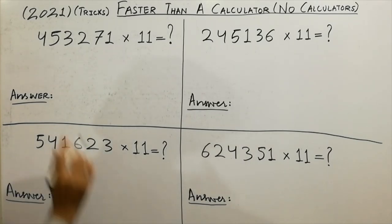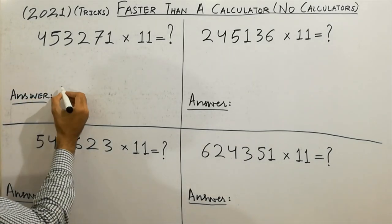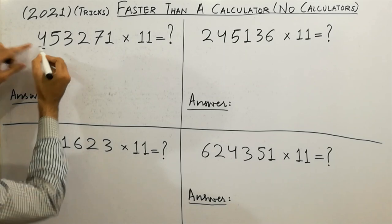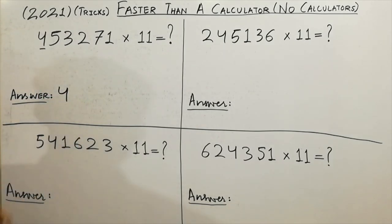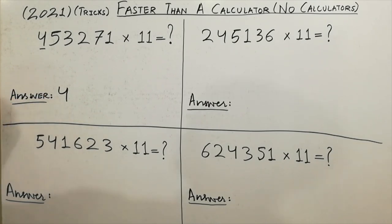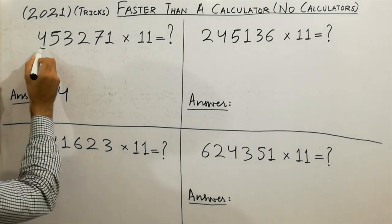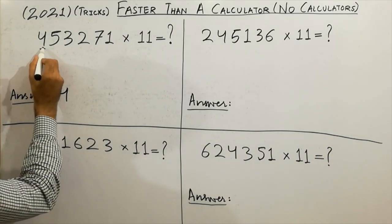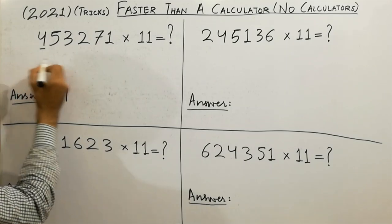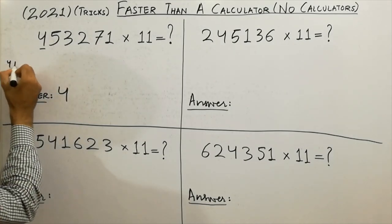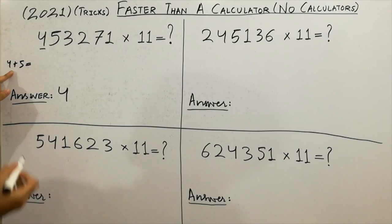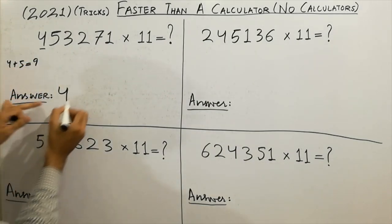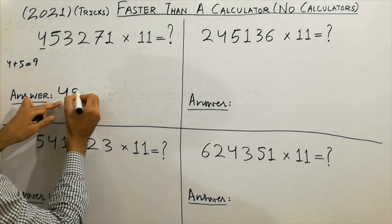Just follow the steps. First of all, you have to write the first digit as it is — that digit is 4. This is the first step. For the second step, you have to write 4 plus 5. 4 plus 5 equals 9, so you write 9 here.